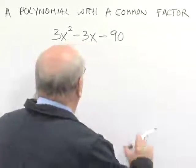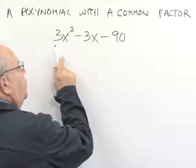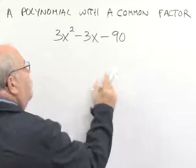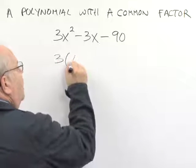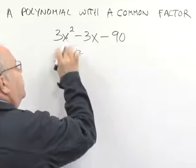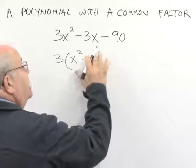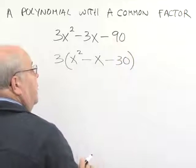Our helpful hint asked us to look for a common factor first. We notice that 3 is a number we can divide into each of these terms. So if we factor out a 3, we can say 3 times x squared is 3x squared, 3 times minus 1x is minus 3x, and 3 times minus 30 is minus 90.